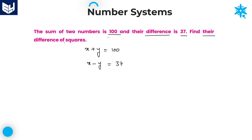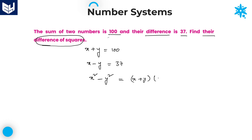Now the question is: find the difference of their squares. The square of the first number is x squared, and the square of the second number is y squared. We need to find x squared minus y squared. As we all know, the formula a squared minus b squared equals (a plus b)(a minus b). So x squared minus y squared equals (x plus y)(x minus y), which equals 100 times 37, which is 3700.